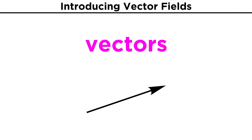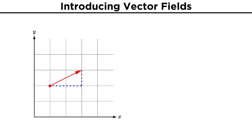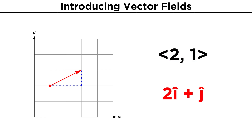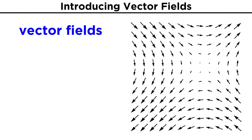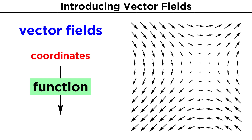We spent a lot of time with vectors when we learned about linear algebra, and not surprisingly, we won't be done with them any time soon. We are used to vectors being made of components which are scalars. We then got used to being able to move these vectors around however we wanted, but now we are going to introduce vector fields, which can be thought of as functions that take in coordinates and give back vectors. These vector fields will end up having vectors assigned to every point throughout the coordinate system, as shown here.